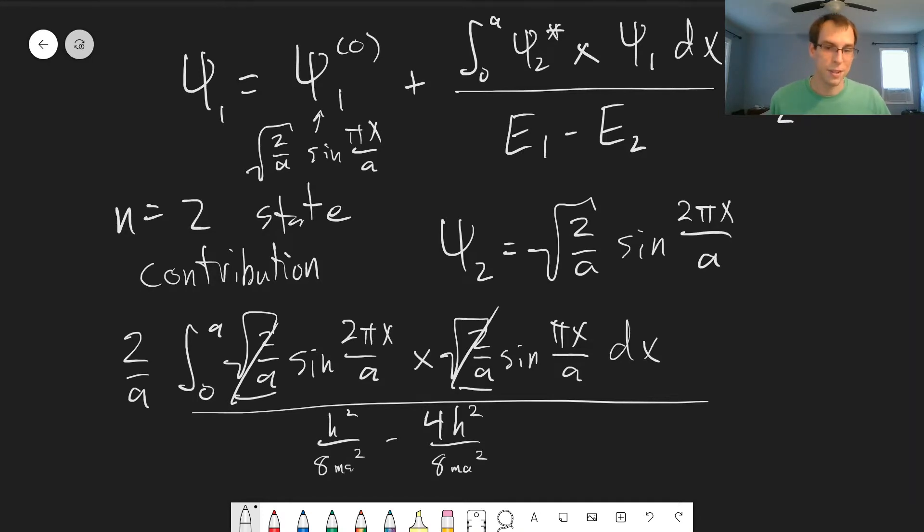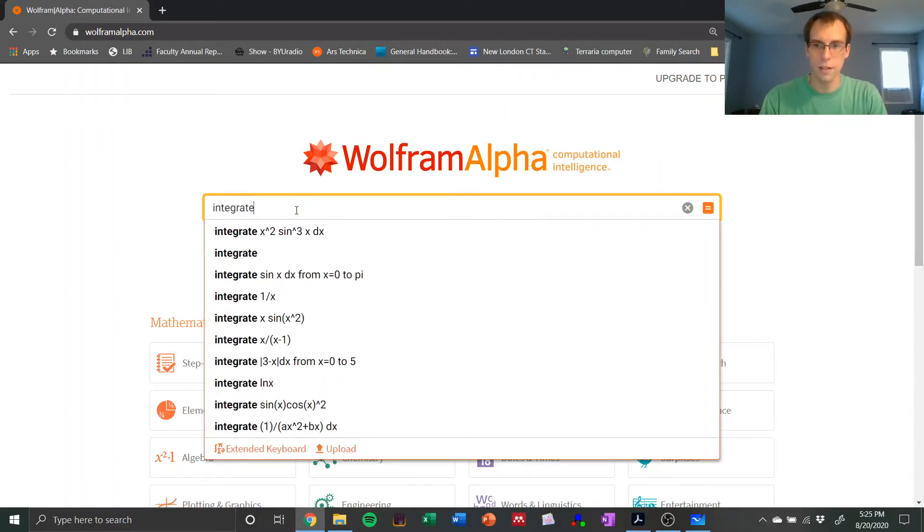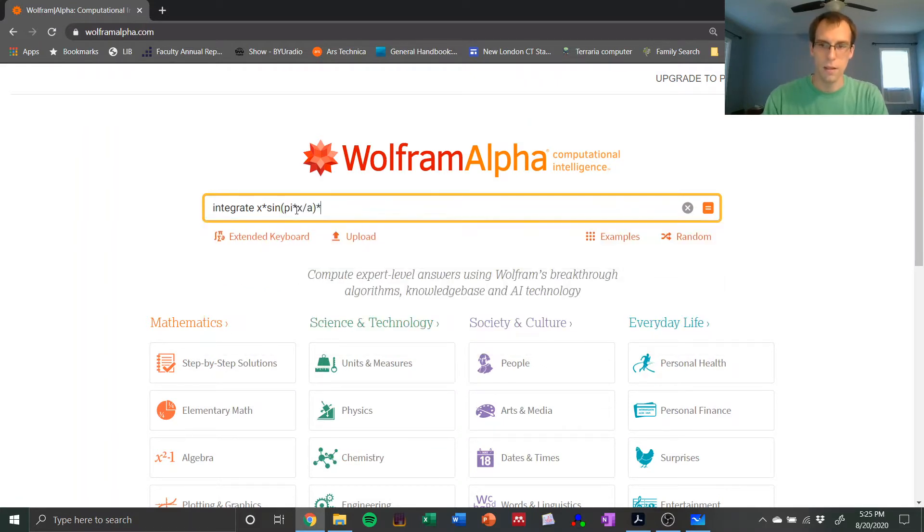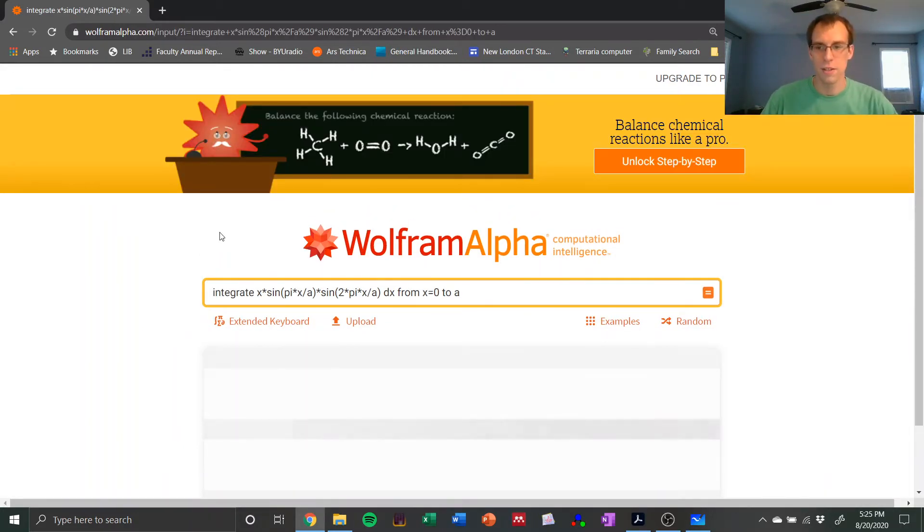And let's plug this into Wolfram Alpha to simplify our lives here. So we will integrate x times sine of π times x divided by a times sine of 2 times π times x divided by a dx from x equals 0 to a. We'll let Wolfram Alpha go ahead and do this calculation for us.